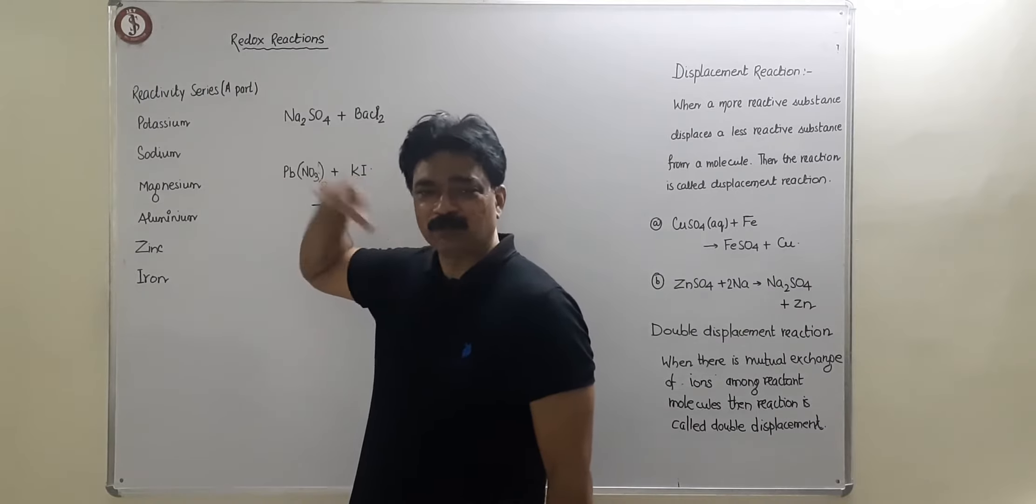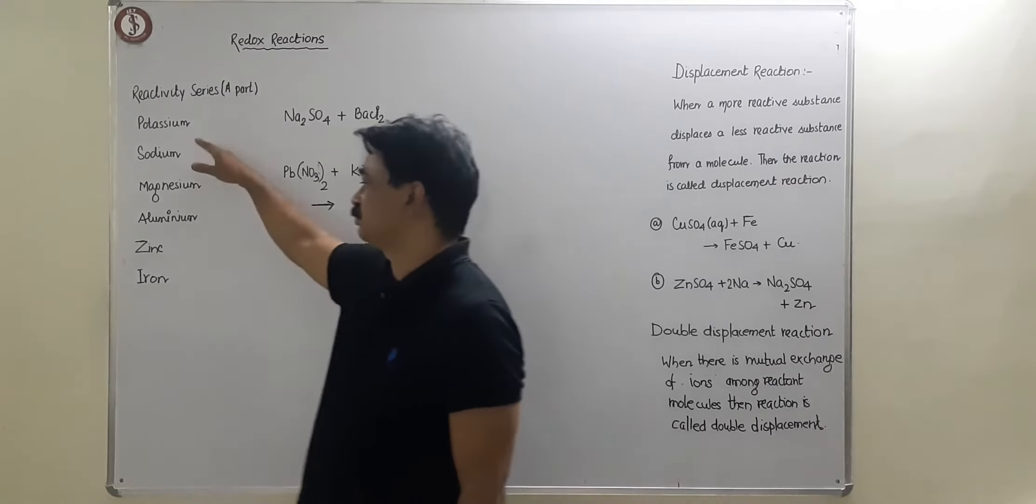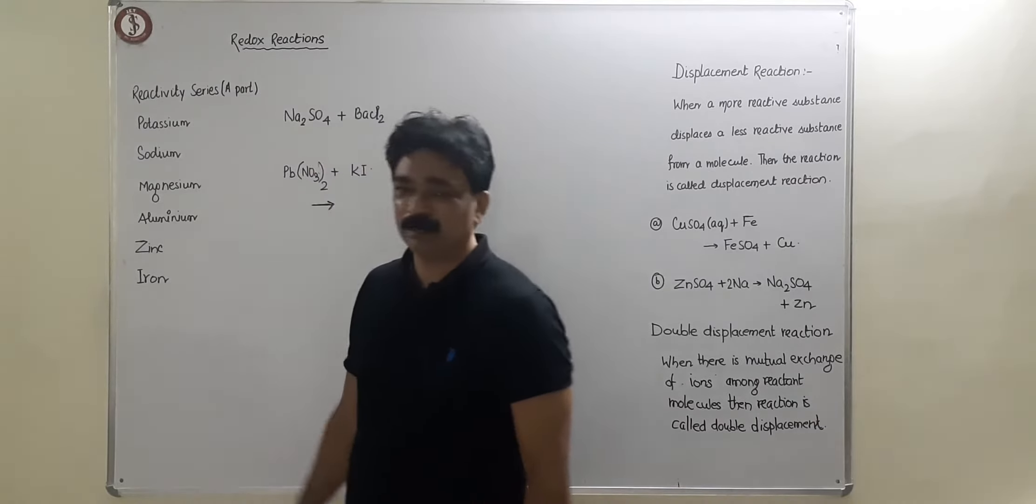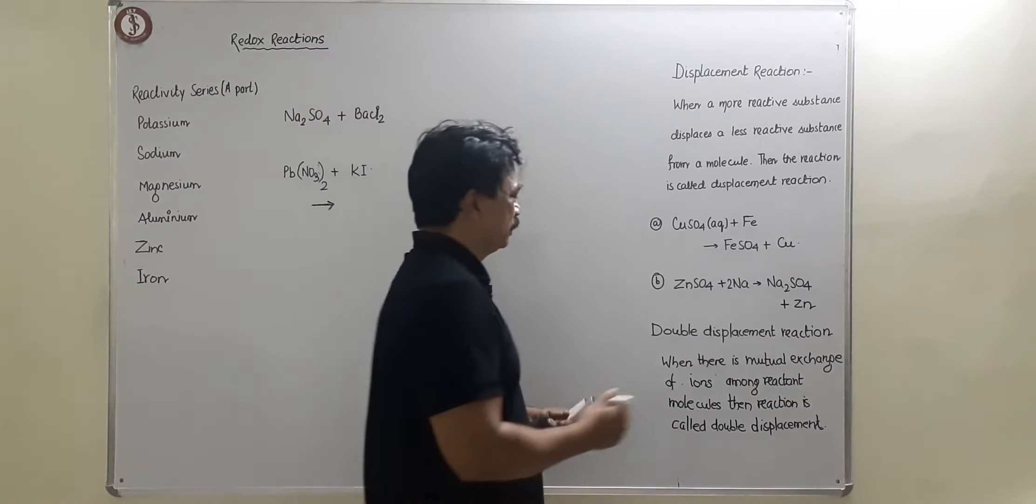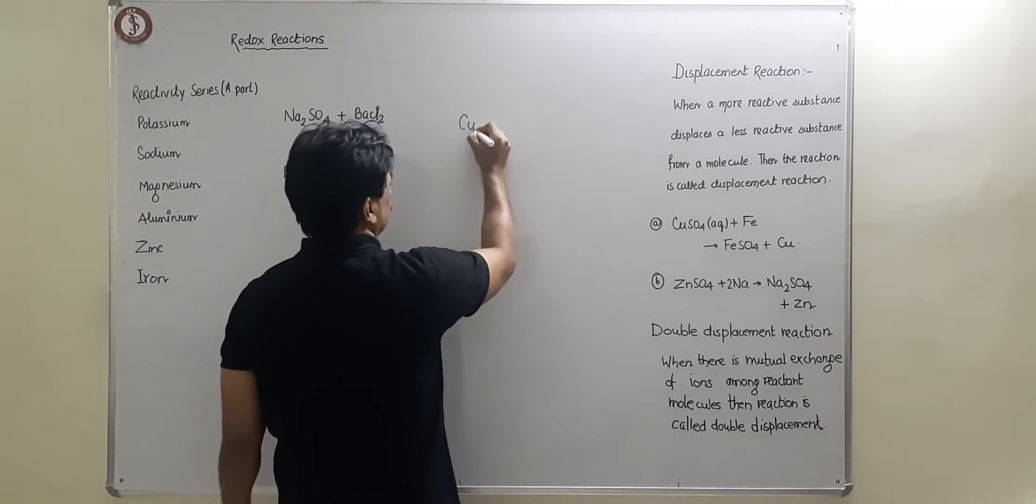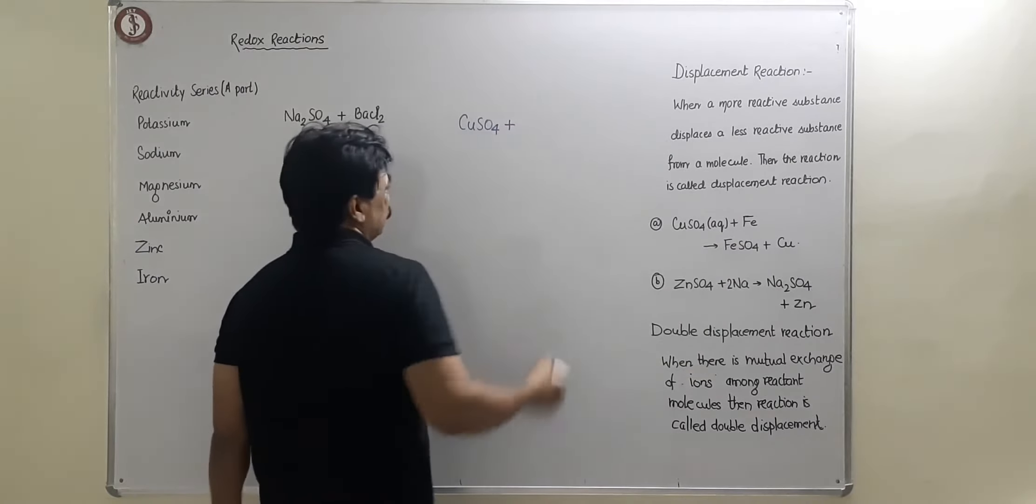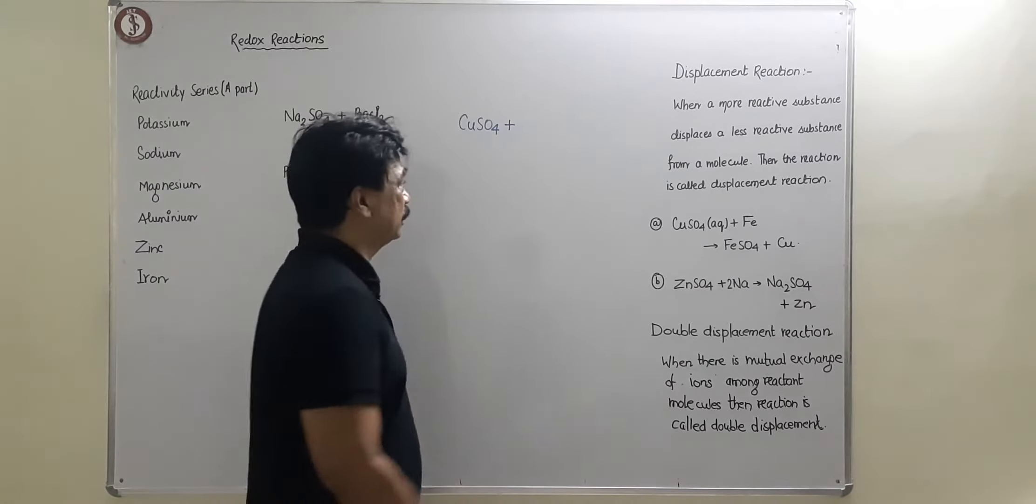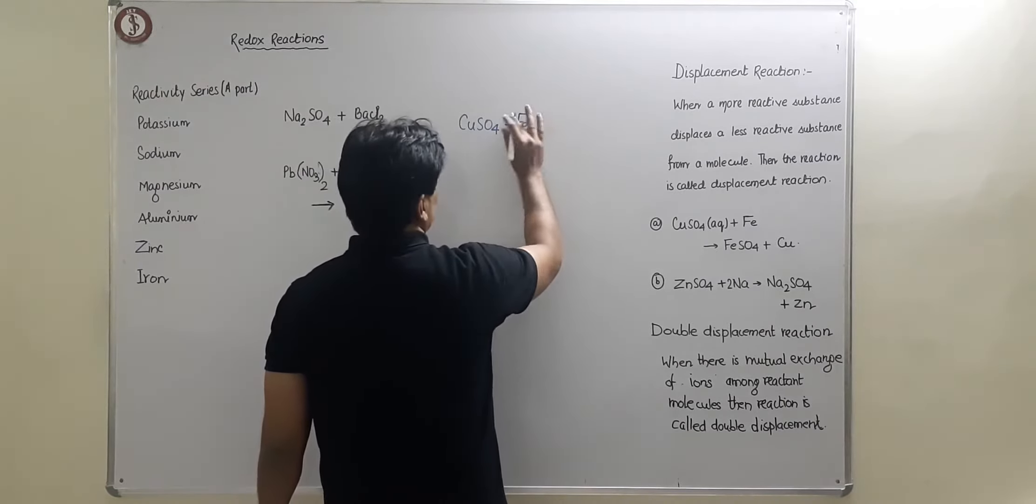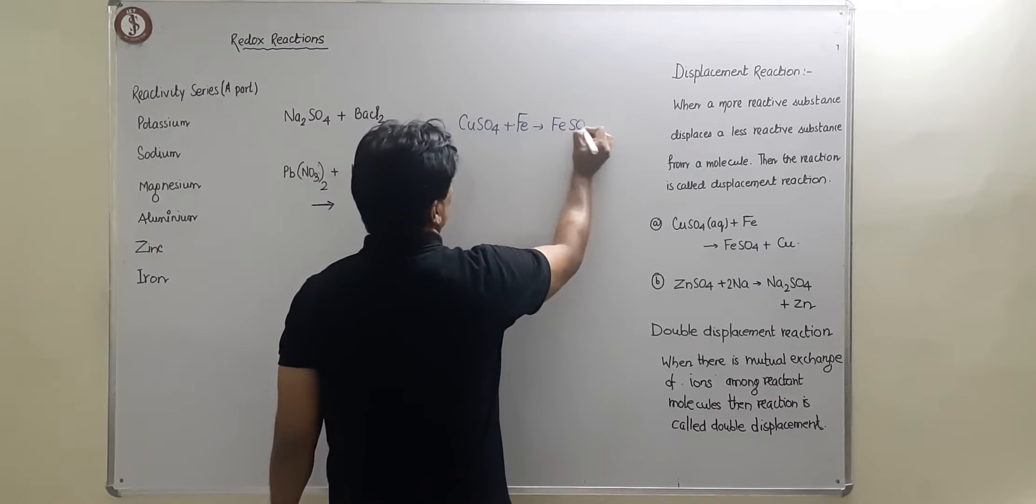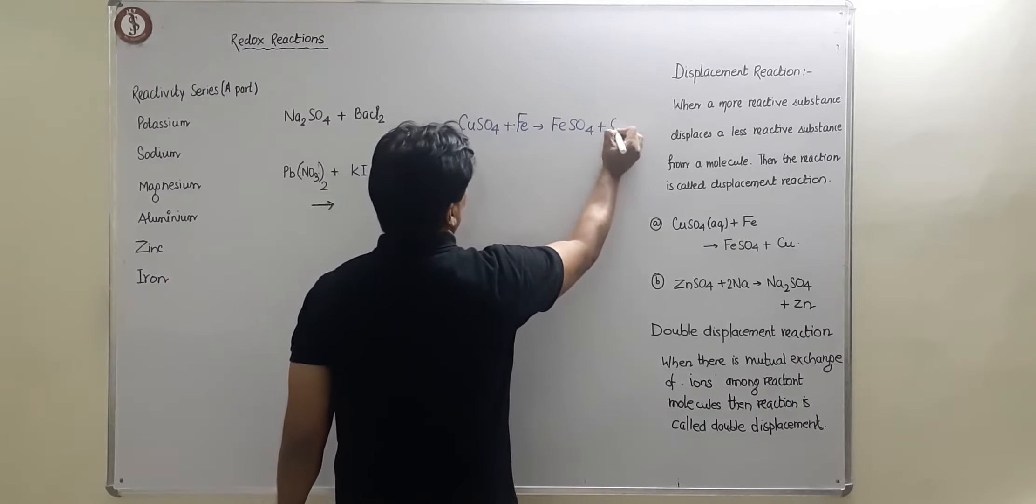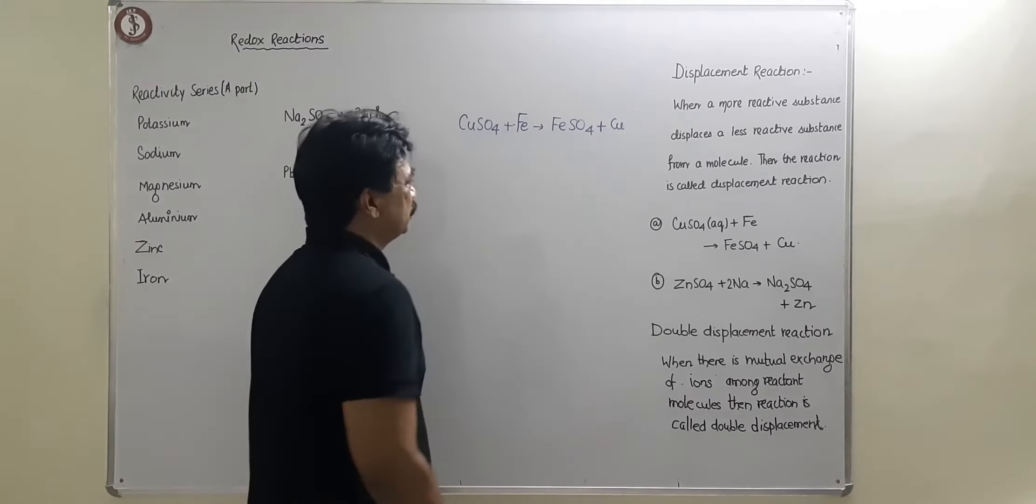I've given you part of the reactivity series: potassium, sodium, magnesium, aluminum, zinc, iron, and copper. I've taken one example over here. Copper sulfate, when it is blue in color, it is copper sulfate pentahydrate blue vitriol. It reacts with iron. Suppose you put an iron nail, then gradually iron will replace copper and displace it.